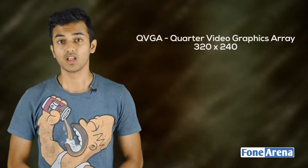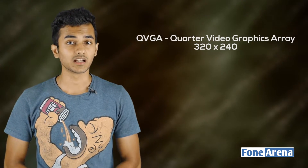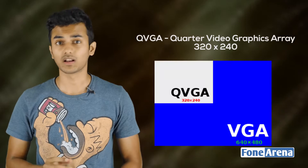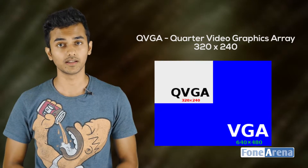Resolution is, in a phone display, the number of pixels on the horizontal and vertical sides. The first resolution type is QVGA — Quarter Video Graphic Array. Its resolution is 320x240 pixels.